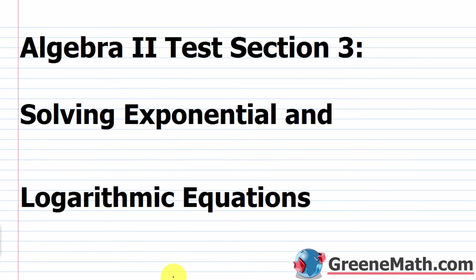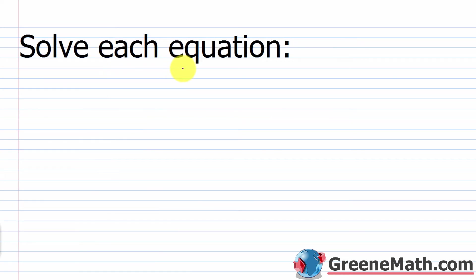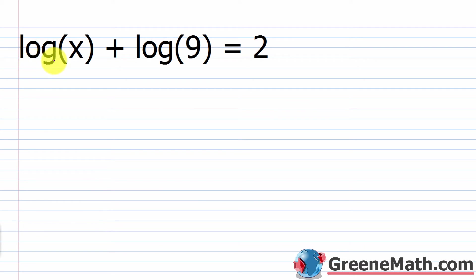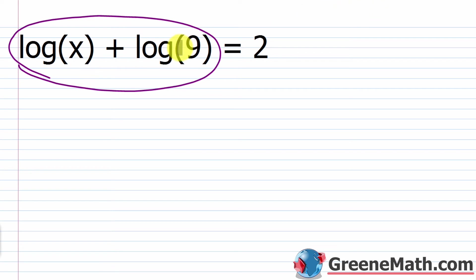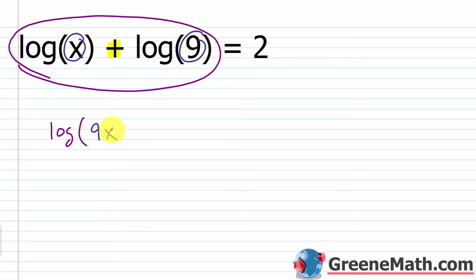Hello and welcome to Algebra 2 Test Section 3 on solving exponential and logarithmic equations. We just want to solve each equation. Let's take a look at log of x plus log of 9 equals 2. On the left side, we want to condense. We have addition involved, so we use multiplication: log of x times 9, or log of 9x, equals 2.